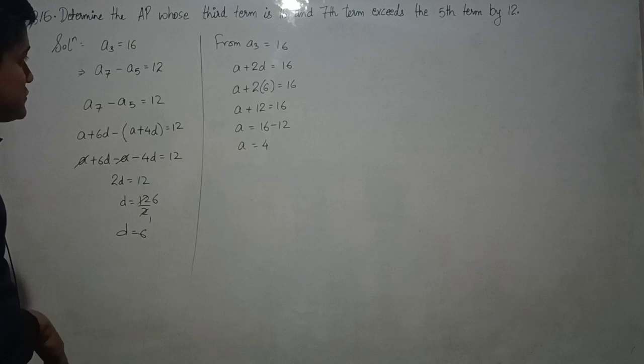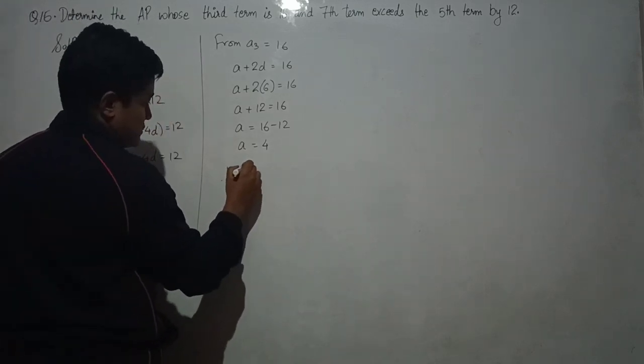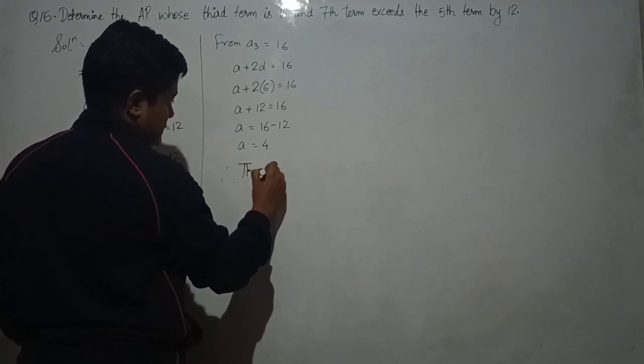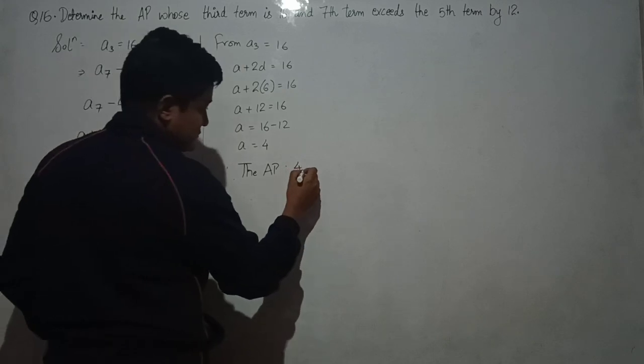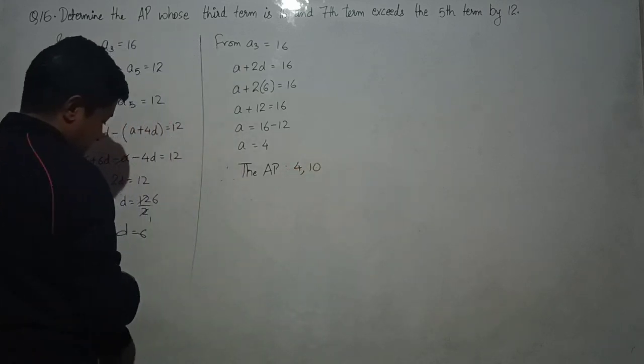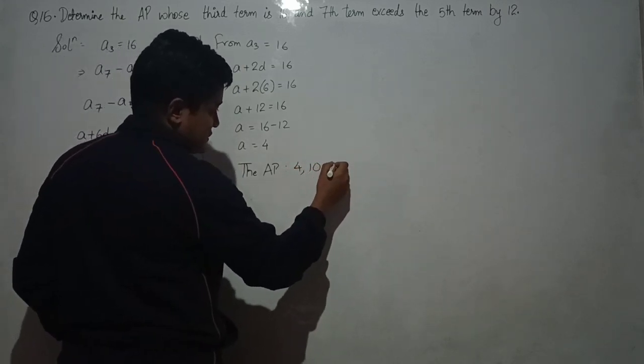Now first term you've got 4. Therefore the AP is first term is 4, adding 6, 10, adding more 6, 16.